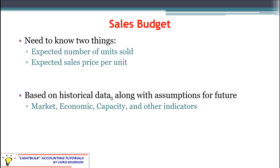When you're putting together the sales budget, there are really two items you need to know. From a textbook perspective, you're going to get those items and just need to know how to put them together. The two items are the expected number of units sold for that period of time, and the expected sales price per unit — how much do we think we can sell it for?